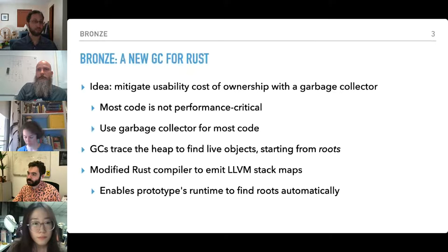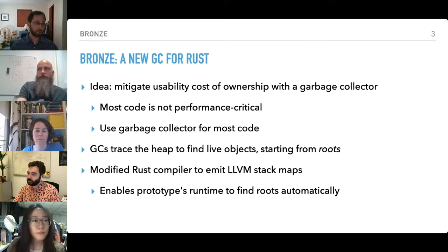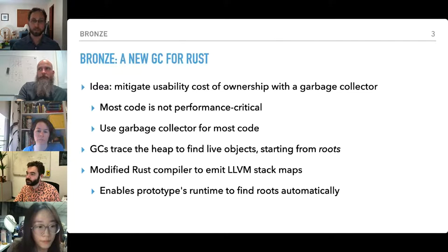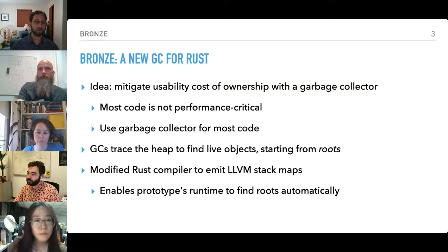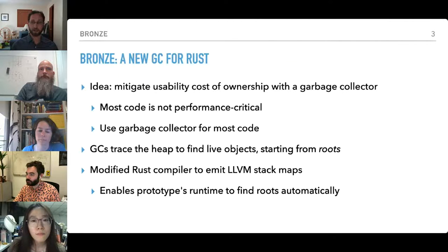We wanted to mitigate the usability and learnability challenges of ownership and borrowing in Rust. Our idea was to mitigate this usability cost of ownership by adding a garbage collector. The rationale is that most code is not actually performance critical. The engineering approach we're proposing is that software engineers should use the garbage collector for most code, and when they discover performance problems, they can switch those hotspots over to using ownership — adopting ownership gradually rather than having to buy in entirely. We modified the Rust compiler to emit LLVM stack maps, enabling the prototype's runtime to define roots automatically.